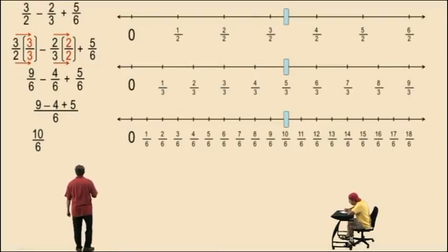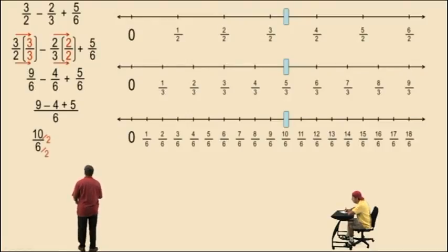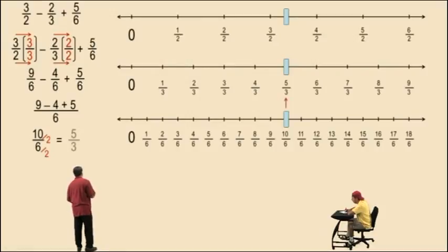You may notice that 10 and 6 have a common factor of 2. 10 and 6 are both divisible by 2. So if we divide both top and bottom by 2, notice we get 5 thirds. And we know 10/6 is equivalent to 5 thirds because 10/6 and 5 thirds have the exact same location on the number line. And this is called reducing. We'll do more reducing later on.